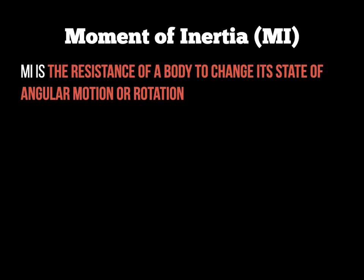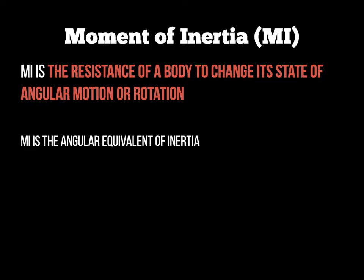The moment of inertia is how resistant a body — an object or a person — is to changing its state of angular motion or rotation. In that sense, moment of inertia is the angular equivalent of inertia in Newton's laws: the body will remain at rest until a force is acted upon it, and moment of inertia describes how resistant that body is to being moved from that state.